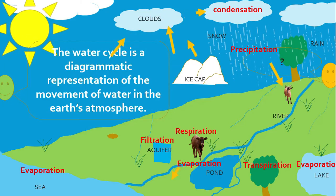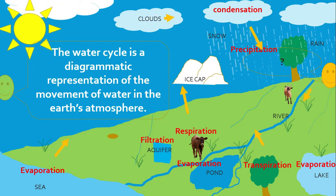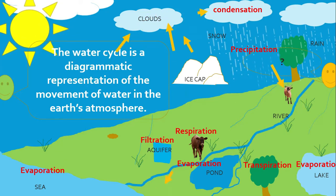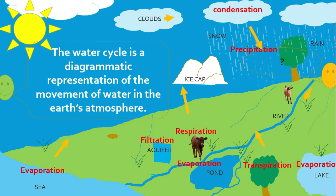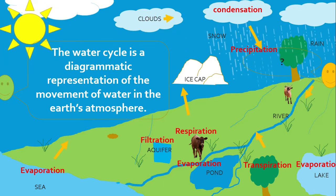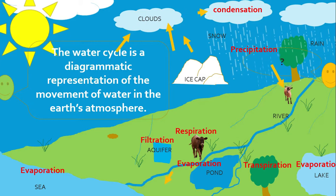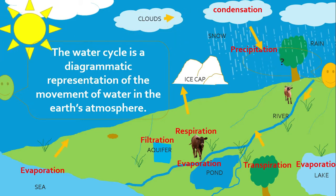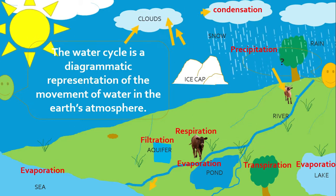The water cycle is a diagrammatic representation of the movement of water in the Earth's atmosphere. The water cycle is driven by the energy from the sun.